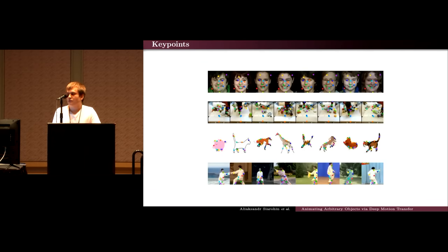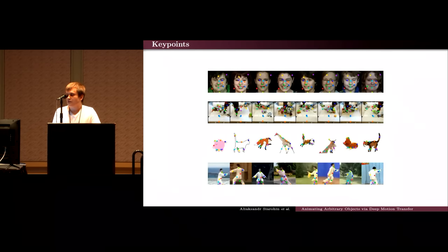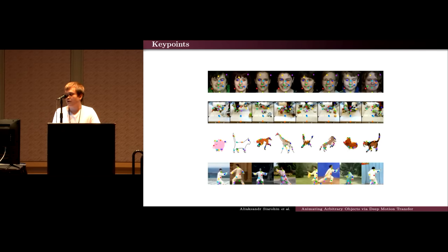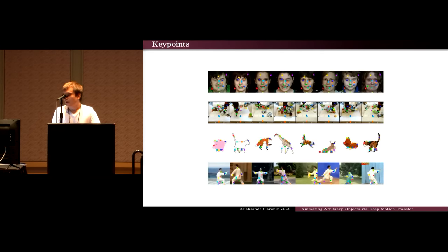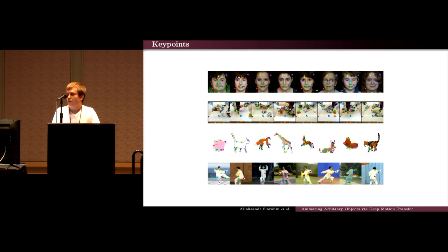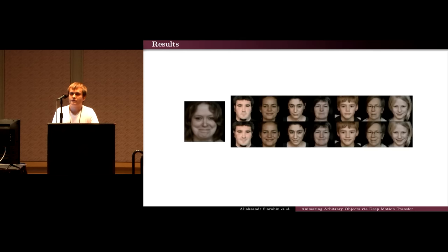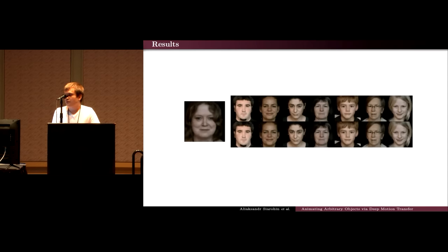We show visualization of keypoints obtained by our method — they are consistent across time and across different instances. For example, the blue keypoint on the face dataset is always located on the nose. On the face dataset, the motion is well-transferred and the identity of the person is preserved. On the robot dataset, a typical example where a keypoint detector is not available, we can still generate a plausible video in which the motion is correctly transferred, and even shadows can be generated.